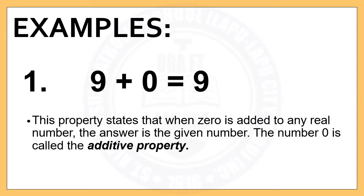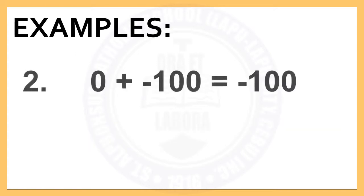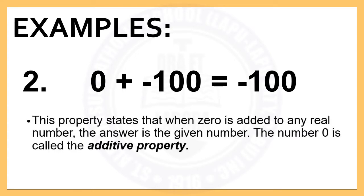The number 0 is called the additive identity. Number 2: 0 plus negative 100 is equal to negative 100. This property states that when you add 0 to any real number, the answer is always the given number.